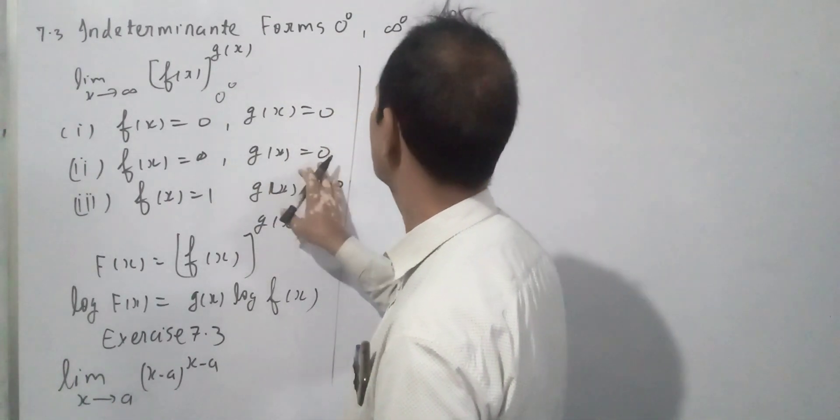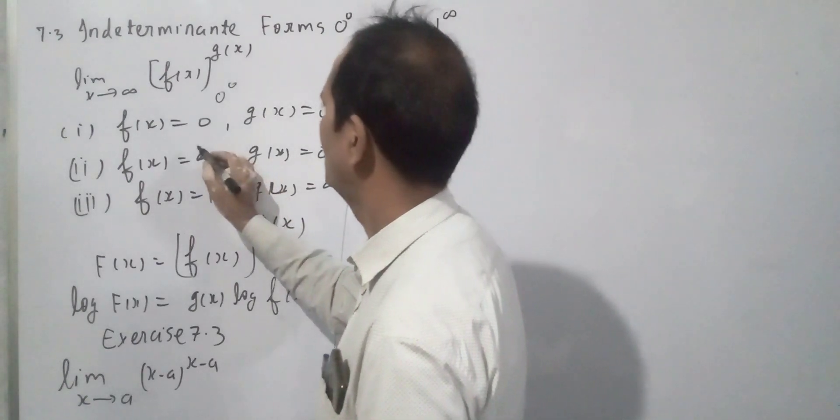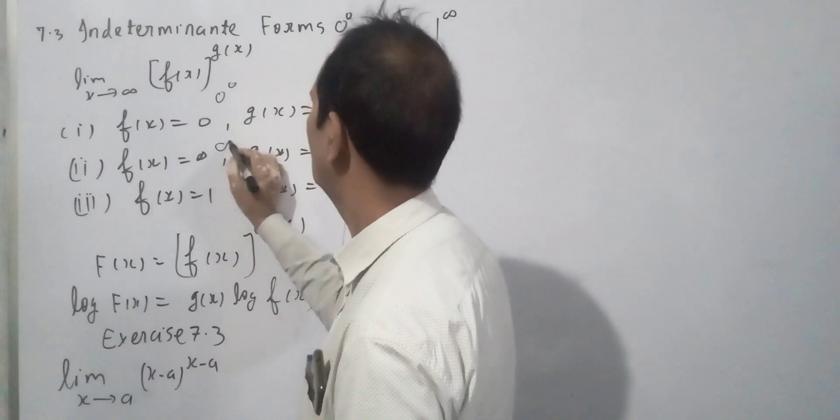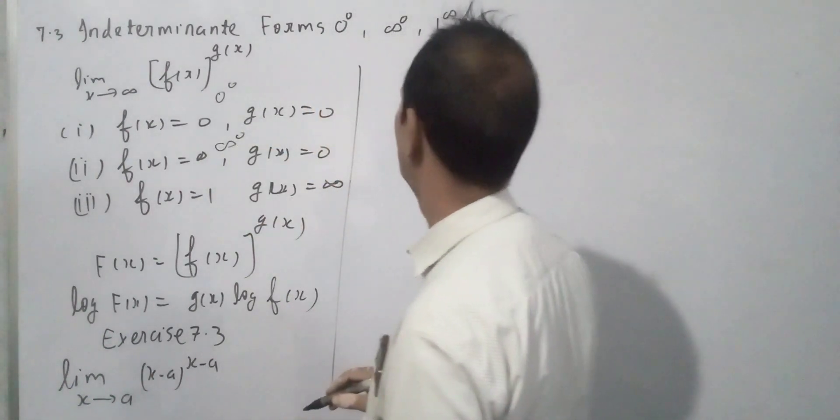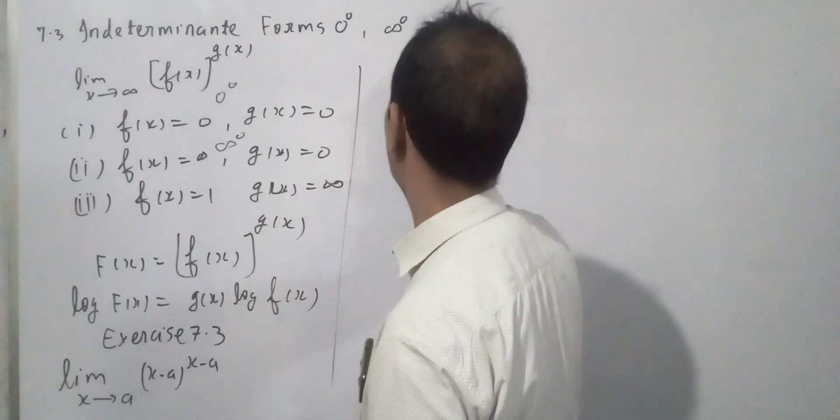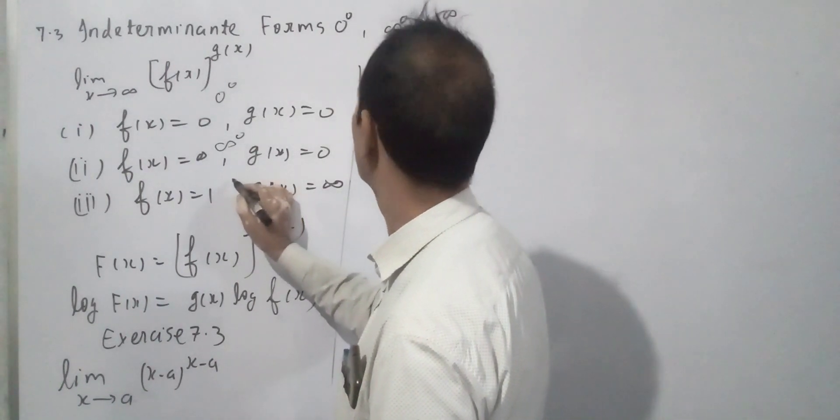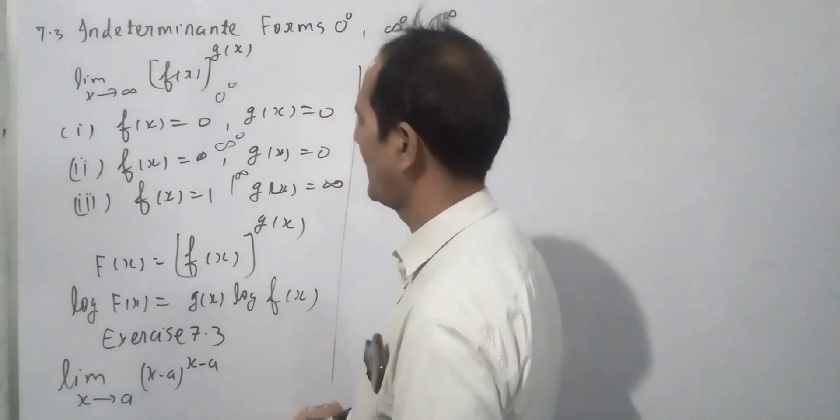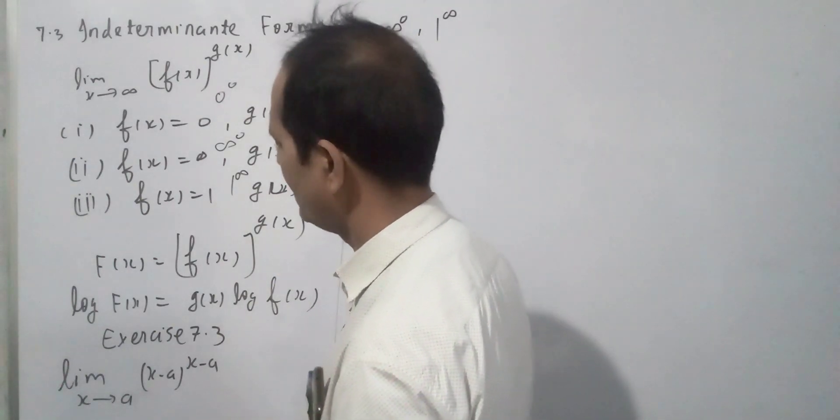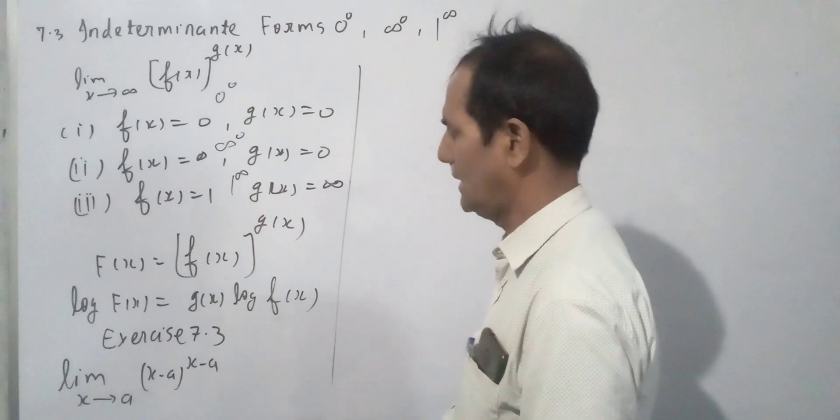If f(x) is 0, g(x) is ∞, this form will be 0. If f(x) is 1, g(x) is ∞, this form will be 1^∞.